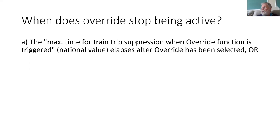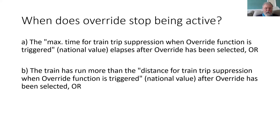In override the driver is expected to be applying the same principles as in staff responsible. Also in the national values, we can set a distance for which the override is available. This can be useful if you have both ends of authorities with stop in SR Balise messages and other ends of authority that don't. If your train has stopped on the approach to an end of authority without a stop in SR Balise, the driver could override to pass it. But if the override remains active too long, it could also apply at the next end of authority that has a stop in SR where the driver is meant to stop — and if they don't, we do want them to be tripped — so the distance can be set according to the design of the infrastructure.